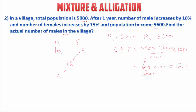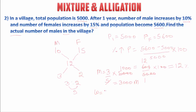Using alligation: 15 − 12 = 3, and 12 − 10 = 2. So the ratio of males to females is 3:2. Since 3 + 2 = 5, males = (3/5) × 5000 = 3000, and females = (2/5) × 5000 = 2000. So the actual number of males in the village is 3000.